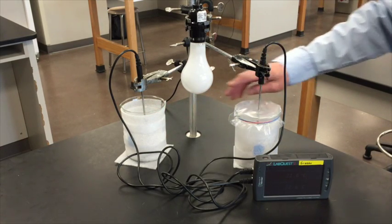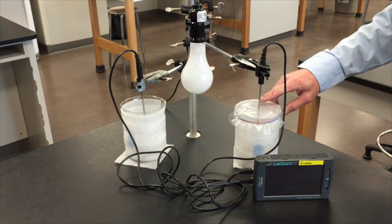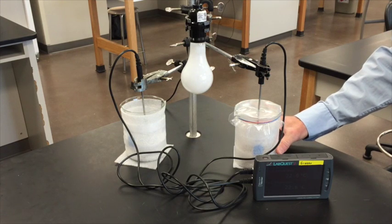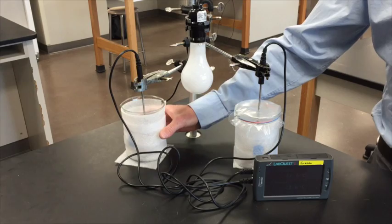And the only difference between the two beakers is that this one has a plastic cover. So this one is basically representing a planet with an atmosphere. This one is a planet without an atmosphere.